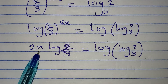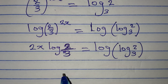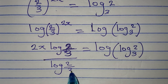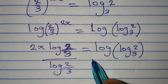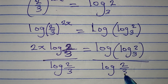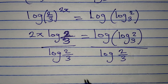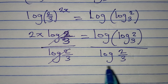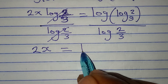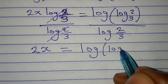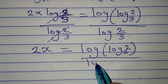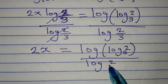From here, we need to make 2x the subject first by dividing both sides by log(2 over 3). Dividing by log(2 over 3) — log(2 over 3) cancels log(2 over 3). And then 2x will be equal to log of [log 2 to base 3] divided by log(2 over 3).